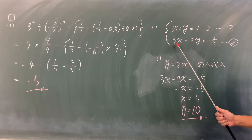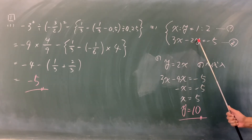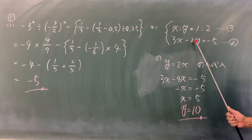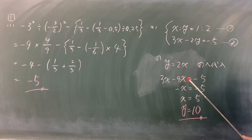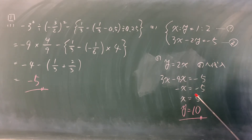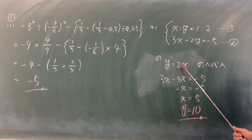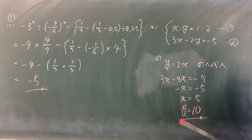内側2つかけてy、イコール外側2つかけて2x。せっかくこの形ですから代入法がおすすめですね。2番の式に代入。3x-2、yは2xですから-2×2x、-4xイコール-5。xは5。ここへ代入、x=5ですからyは10となります。